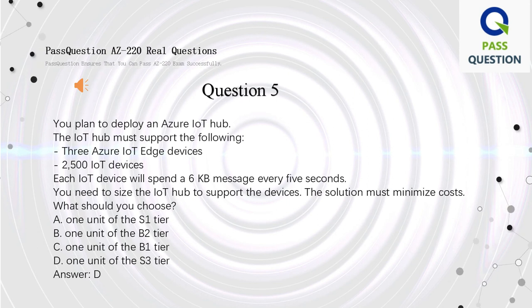Question 5. You plan to deploy an Azure IoT Hub. The IoT Hub must support the following: three Azure IoT Edge devices, 2,500 IoT devices, and each IoT device will send a 6KB message every 5 seconds. You need to size the IoT Hub to support the devices. The solution must minimize costs. What should you choose? A. One unit of the S1 tier. B. One unit of the B2 tier. C. One unit of the B1 tier. D. One unit of the S3 tier. Answer: D.